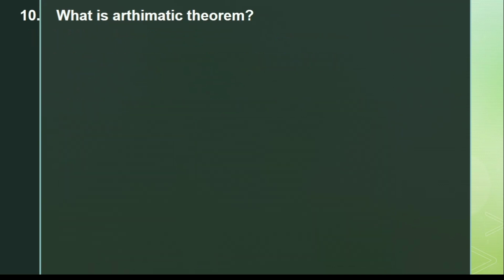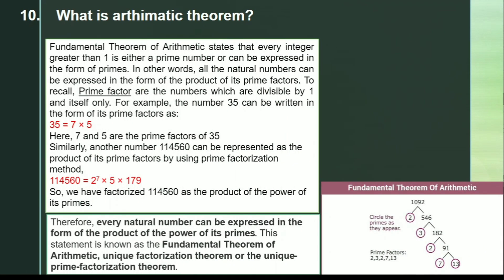Next question: what is the fundamental theorem of arithmetic? It states that every integer greater than one is either a prime number or can be expressed in the form of primes. In other words, all natural numbers can be expressed as a product of their prime factors. For example, the number 35 can be prime factorized as 7 × 5.